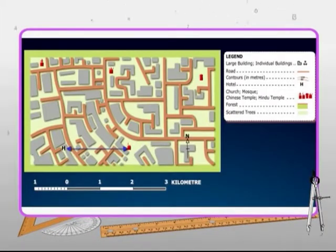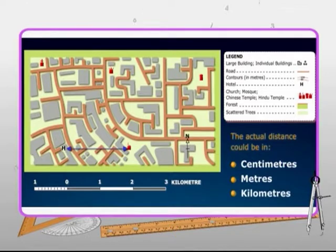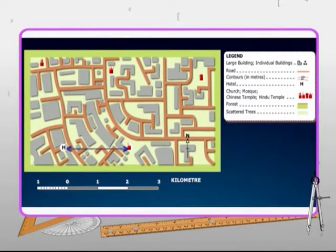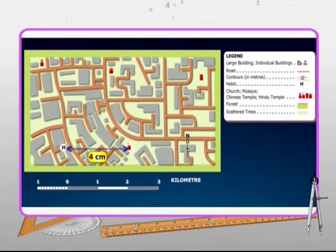The actual distance between two points on the ground can be obtained by making use of the scale shown on the map. The actual distance could be in centimeters, meters or kilometers, depending on the scale of the map. Here are the steps to be followed in measuring the distance between two points on the map. Use a ruler to measure the length between two points, say the hotel and mosque on the map. We can see that the straight line distance between the hotel and the mosque on the map is four centimeters.